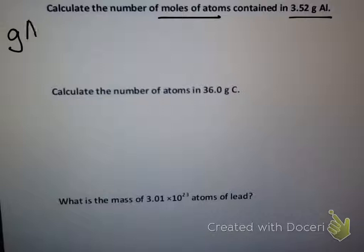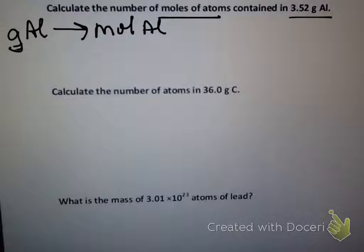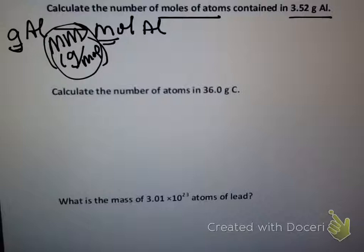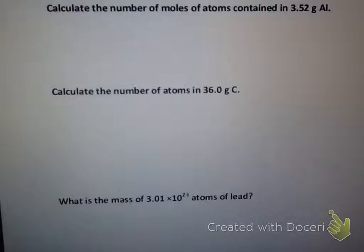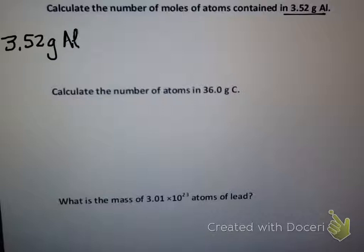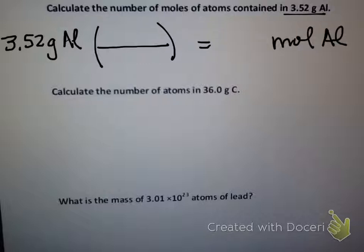We're given grams of aluminum and we want to calculate the number of moles — so we need to convert grams of aluminum to moles of aluminum. Do we have a conversion factor that has both grams and moles? Yes — molar mass. Molar mass is always grams per mole and is found on the periodic table. So whenever you're converting mass to moles, you use molar mass. We start with what we're given: 3.52 grams of aluminum.